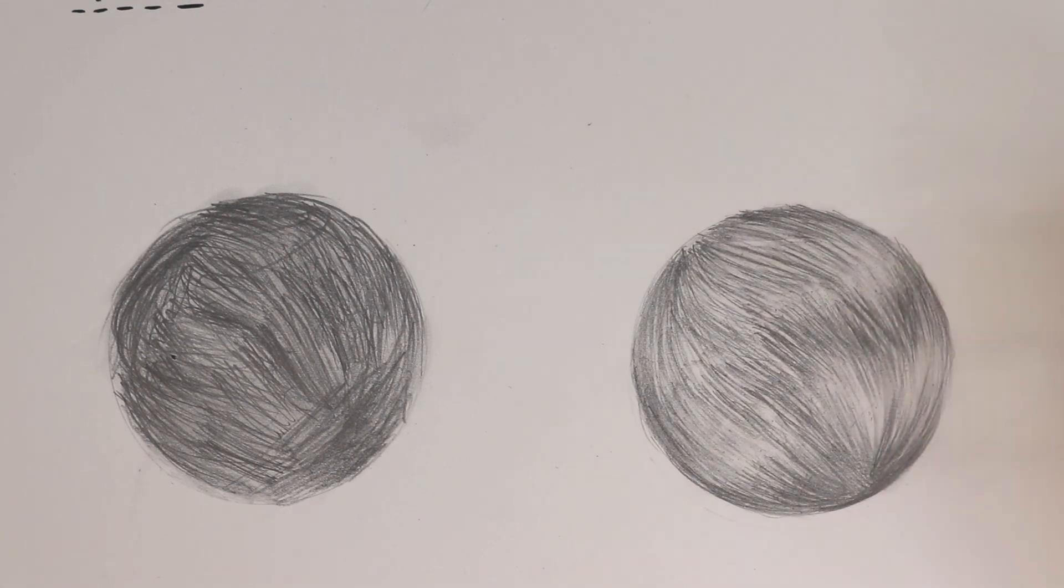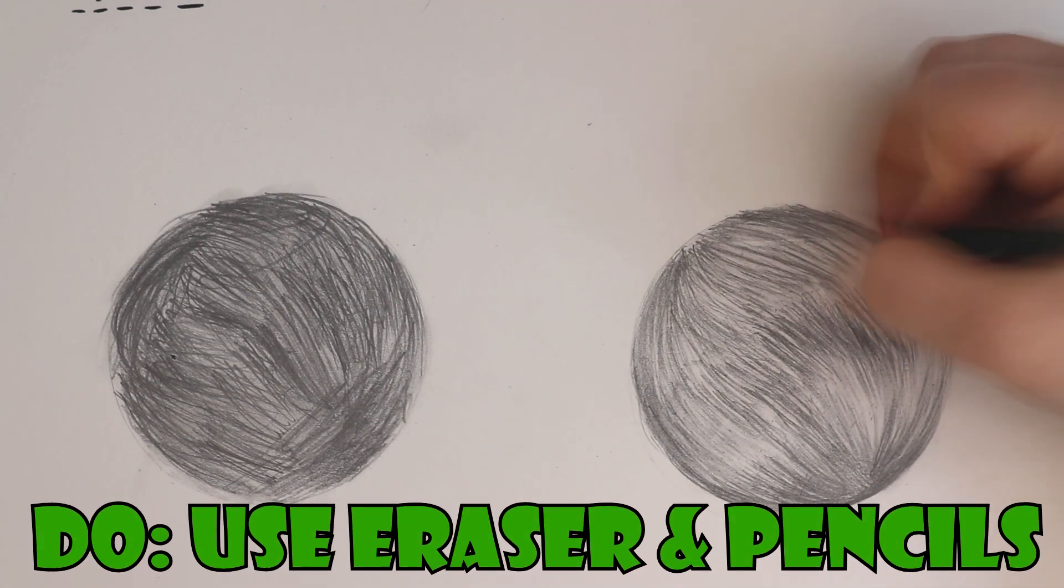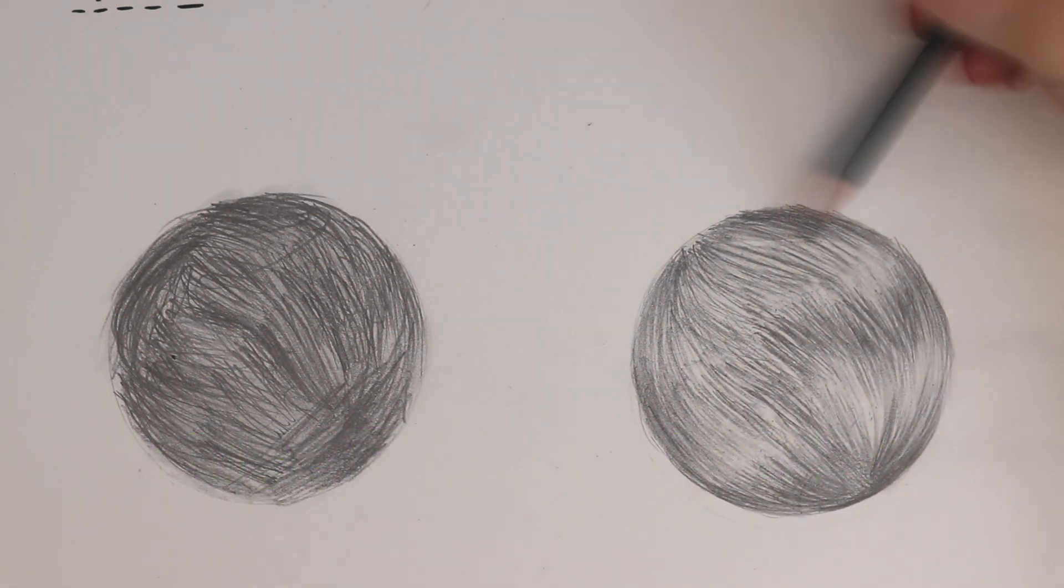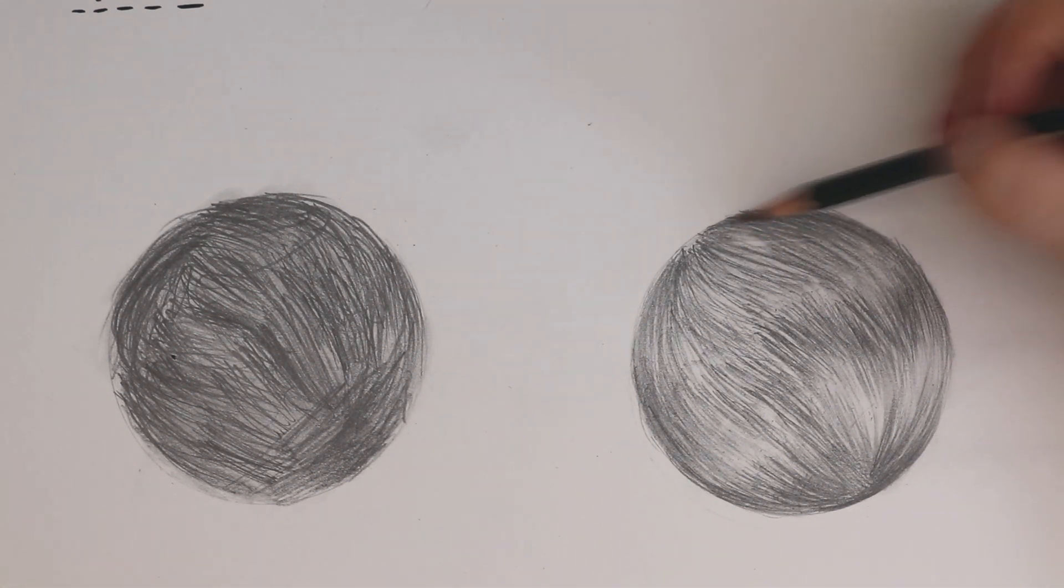And I'll also do this process a few times, maybe two or three times where I go in with the eraser, lift up some of that pencil, go back in with some more graphite, and then use the eraser again until I feel that the fur is looking exactly how I want it to look.